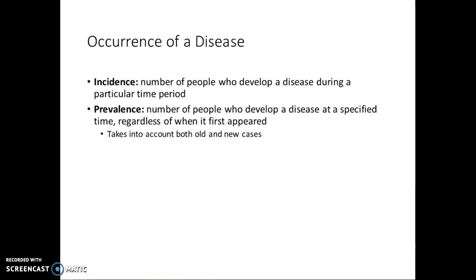Consider chlamydia as an example. If you get chlamydia in September, get treated, and then get it again in December, that counts as two incidences of chlamydia. However, if you remained untreated from September to December, that is only one case. So appropriate documentation of treatment is very important.